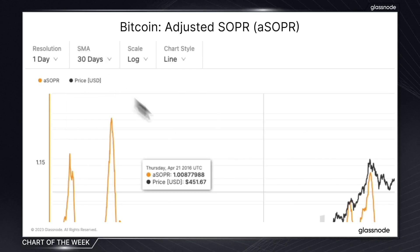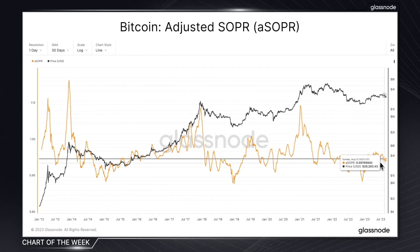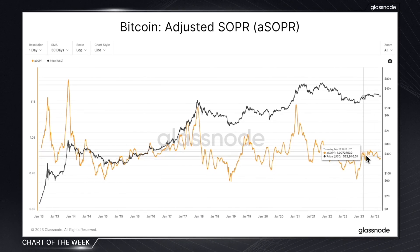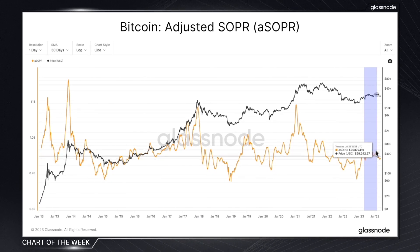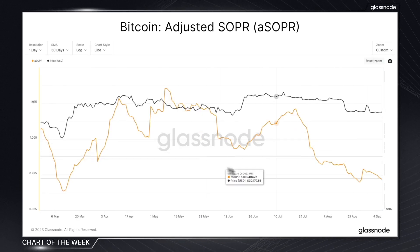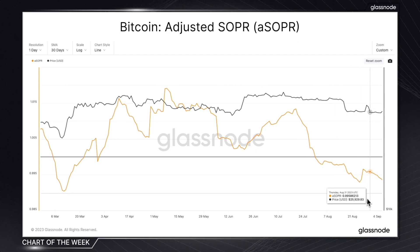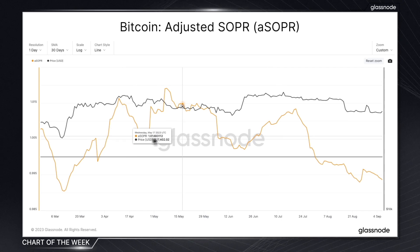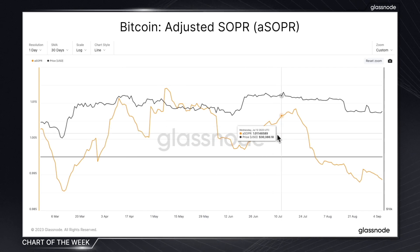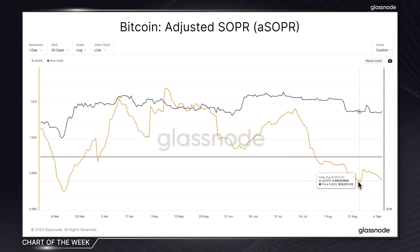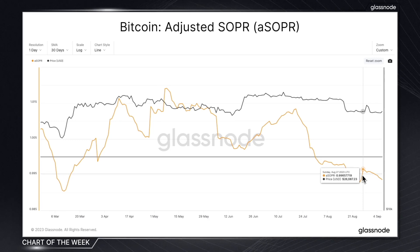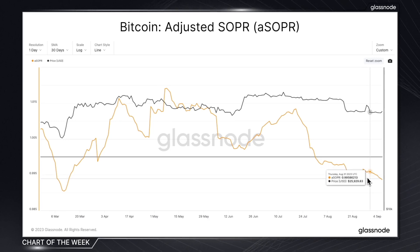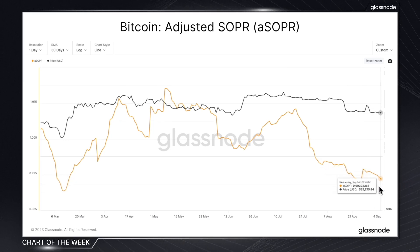We can see that recently the aSOPR has dipped below 1. In other words, on average right now, the market is currently realising net losses. This is quite a notable shift, because it marks an end to the previously dominant, albeit quite modest, period of profit. And while we did see a rally from the lowest point, the trend has since reversed, ushering in a period dominated by losses.